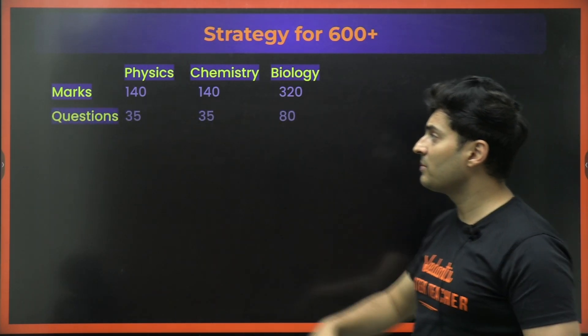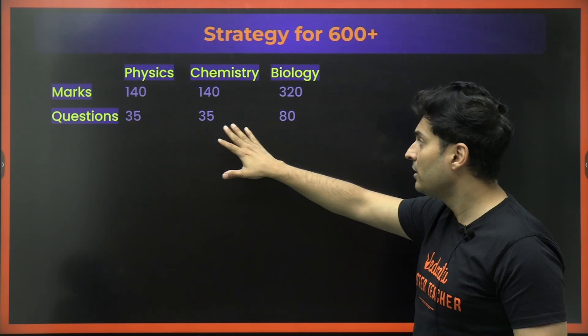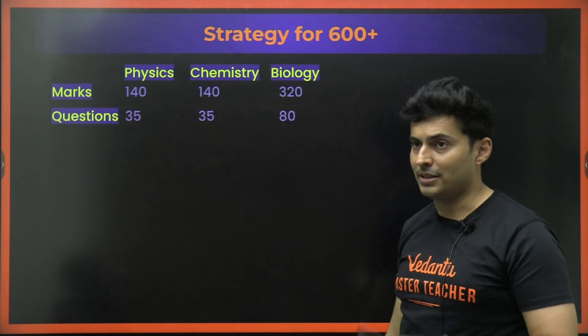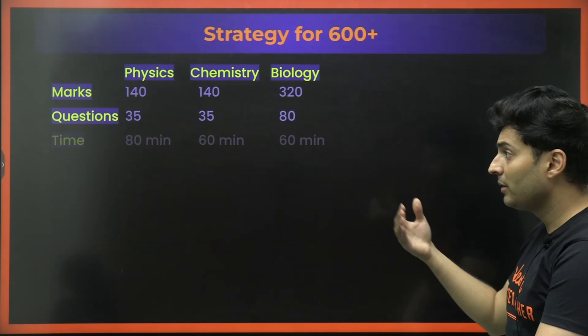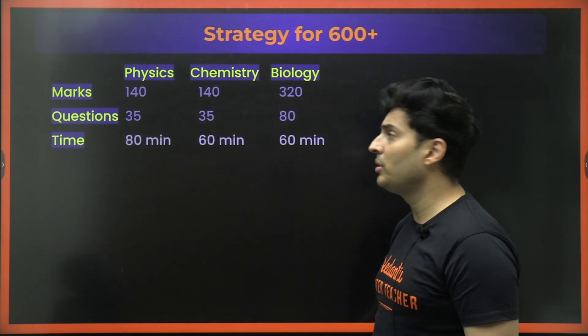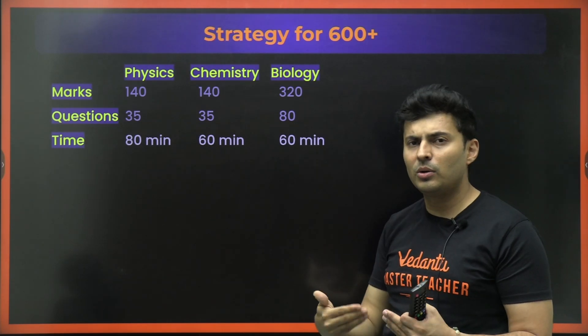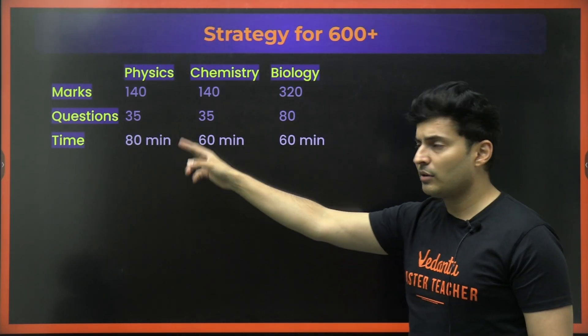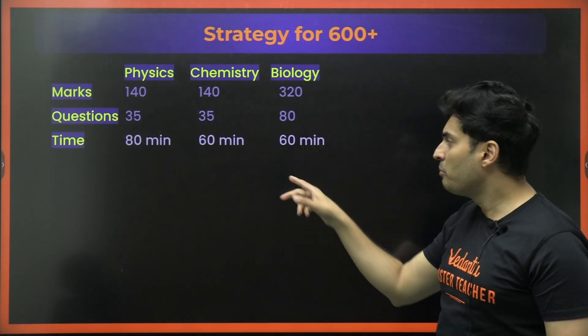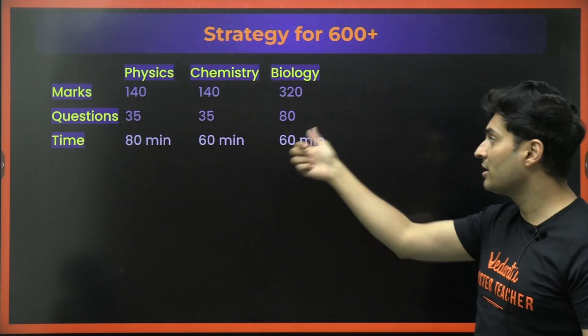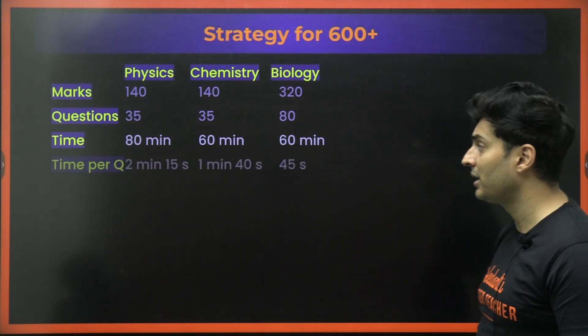Then for getting these marks, you need to solve 35 questions in physics, 35 questions in chemistry and 80 questions in biology. Now for solving these questions, how much time should you take? Well, 80 minutes in physics, 60 minutes in chemistry because you can do a little bit faster. Physics involves a little bit more calculations. Biology can be done really quick in 60 minutes and it is possible because you know it or you don't know it.